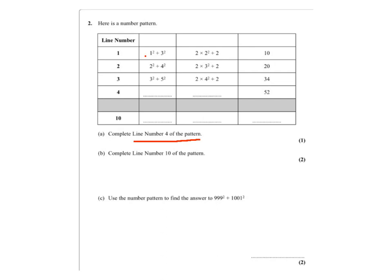As you can see it's 1, 2, 3 so the next one will be 4 squared and here is 3, 4, 5 so the next one is plus 6 squared.